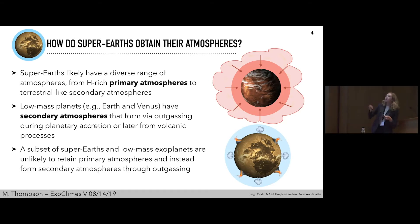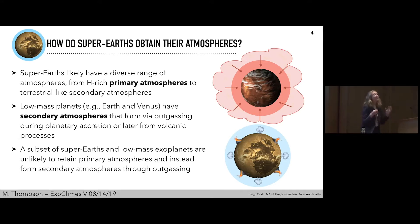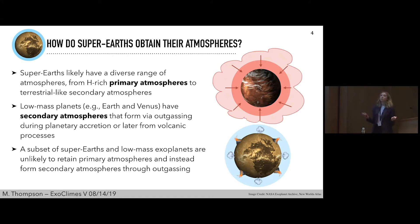Here I have two little schematics showing primary atmospheres in red and secondary atmospheres in blue. It's likely that a subset of super-earths and other low mass exoplanets will not be able to retain significant primary atmospheres. As we talked about with atmospheric escape this morning, this is complicated, but it's still likely that some of them won't be able to hold on to them for very long, so secondary atmospheres that form via outgassing are going to be important. For the remainder of my talk I'll be focusing on these secondary outgassing atmospheres.